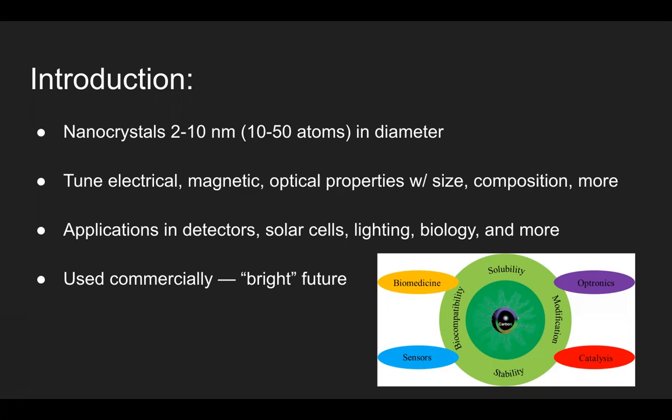Along with size, we can also tune electrical, magnetic, and optical properties with other factors such as composition and the distribution of the material within the quantum dot. Because of the size and versatility, quantum dots can be used in a variety of applications, ranging from solar cells and lighting to biology. And we can use them despite their relative instability in commercial technologies, such as televisions. There's room for improvement in this arena, as well as in improving quantum dot devices, reducing their toxicity, and more. But their extensive use in research and commercial technologies so far provides very promising future outlooks.